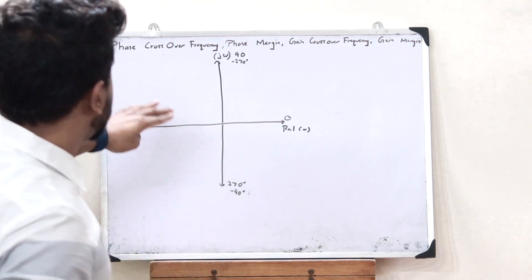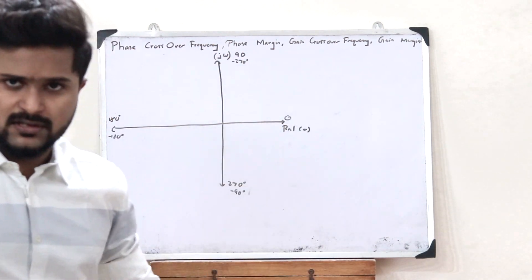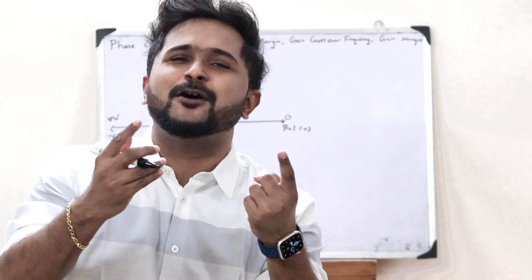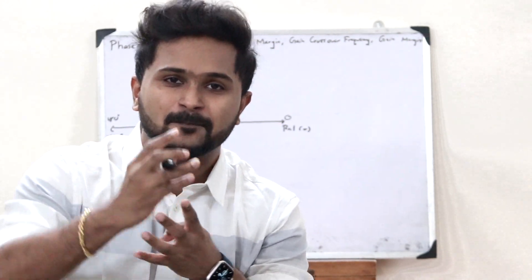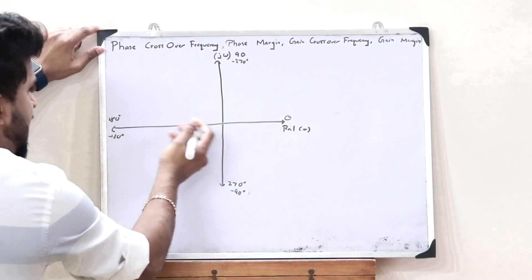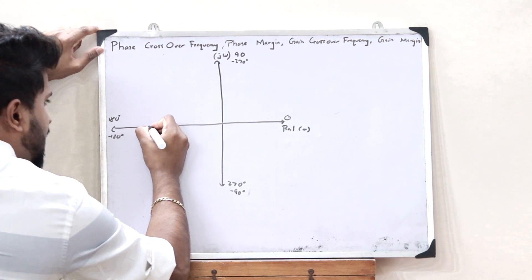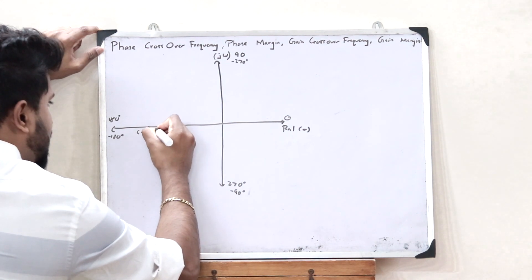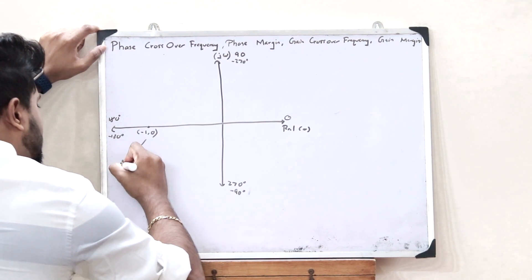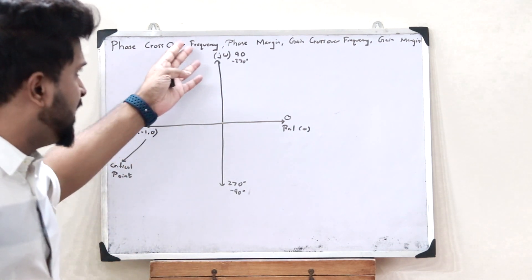In the case of finding these terms — phase crossover frequency, phase margin, gain crossover frequency, and gain margin — in the case of a polar plot, there is one very important and very interesting point. That is what we refer to as the critical point. The critical point is present on the negative real axis at a phase of minus 180 degrees, at a point minus 1, 0.